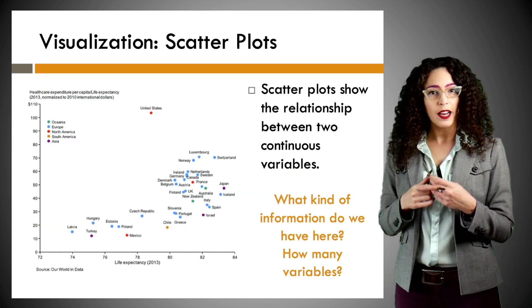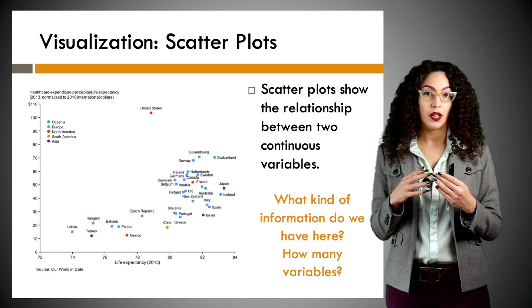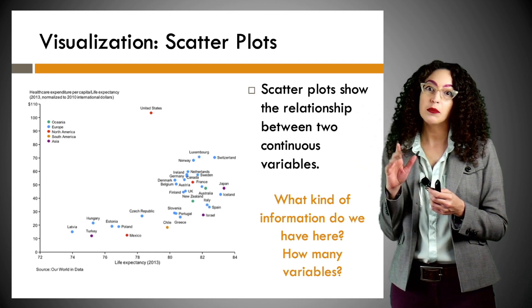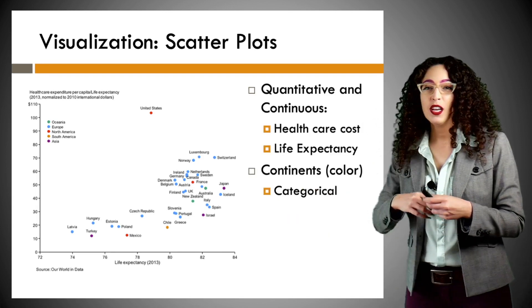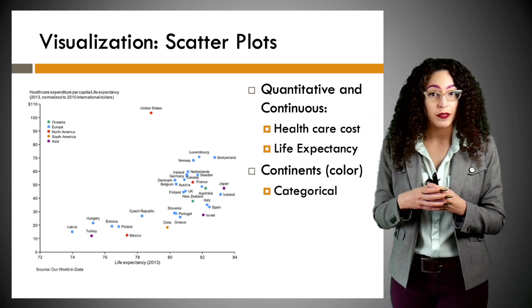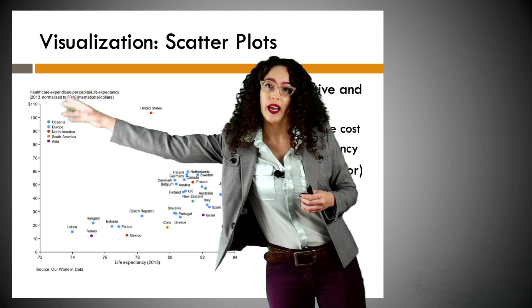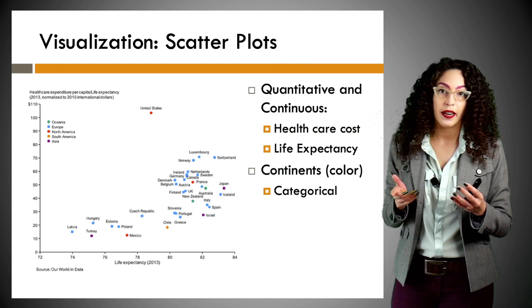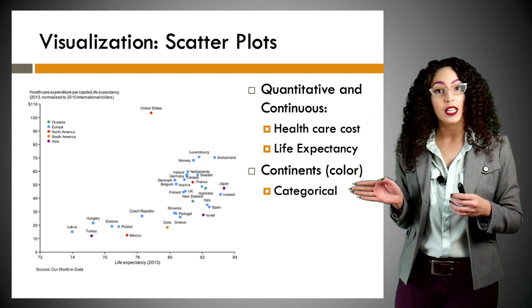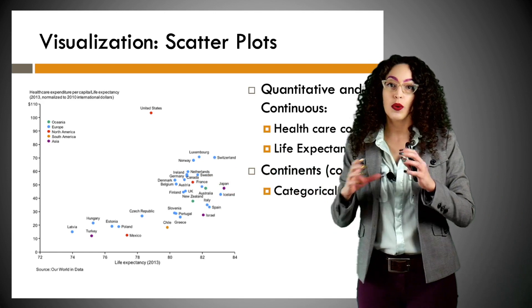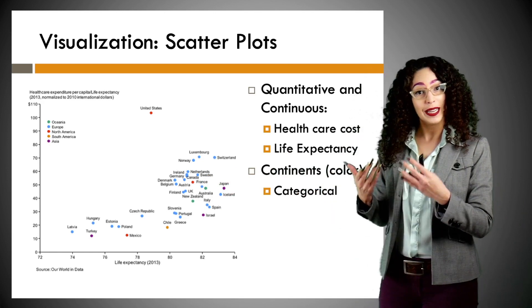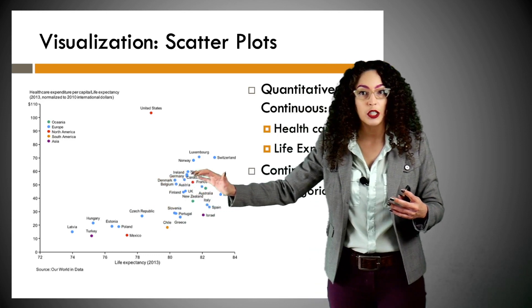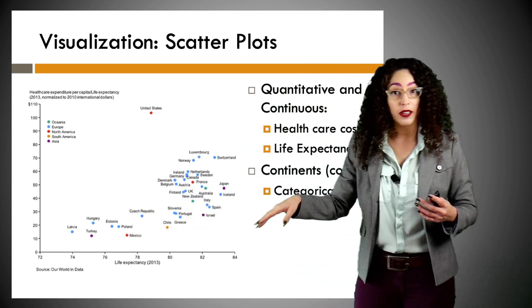Next up, we have scatter plots. Scatter plots are really good at showing the relationship between two continuous variables. We have healthcare cost on the y-axis and life expectancy on the x-axis. We also have one more variable — the continents done by color, which is categorical. The different colors let you know what continent each country is from. It looks like there's some sort of positive relationship: the more you pay in healthcare costs, the longer you live.